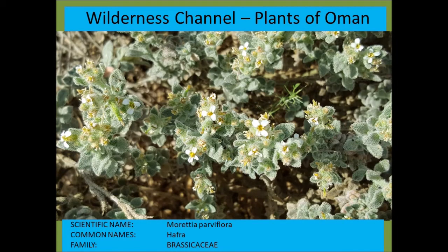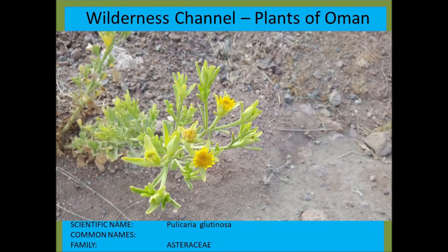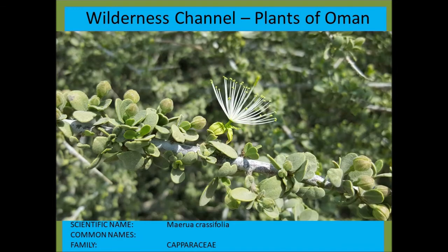Moricandia parviflora mentioned again from the Brassicaceae. Pulicaria glutinosa — one of many Pulicaria species. Maerua crassifolia — one of the Capparaceae species. The three genera in the Capparaceae that occur in Oman are Maerua, Capparis, and Cadaba.